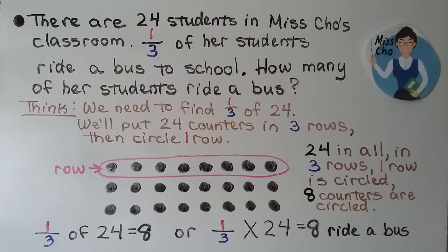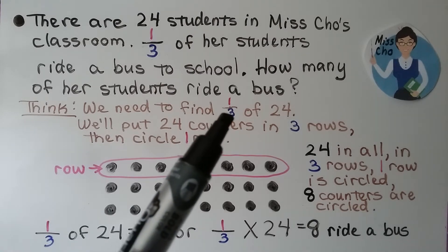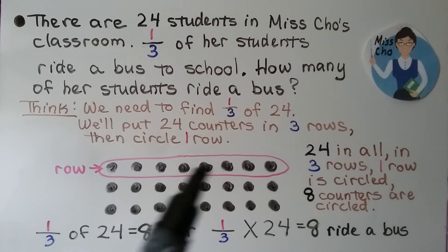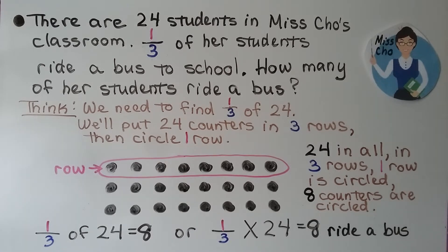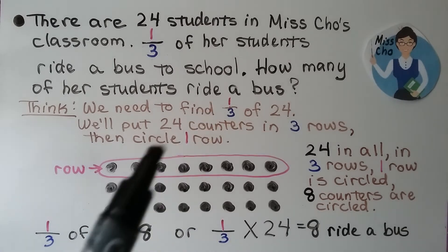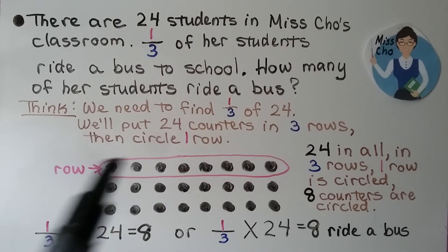There are 24 students in Miss Cho's classroom. One-third of her students ride a bus to school. How many of her students ride a bus? We need to find one-third of 24. We'll put 24 counters into three rows — our denominator is three. We'll put them into three rows until we have 24 in all. We circle one row because the numerator is one.